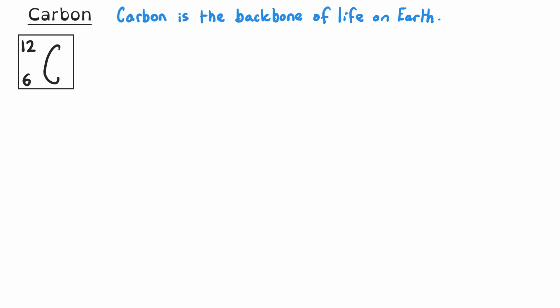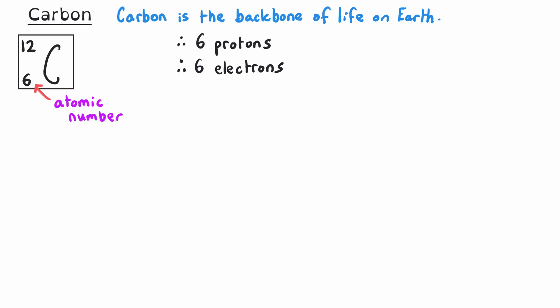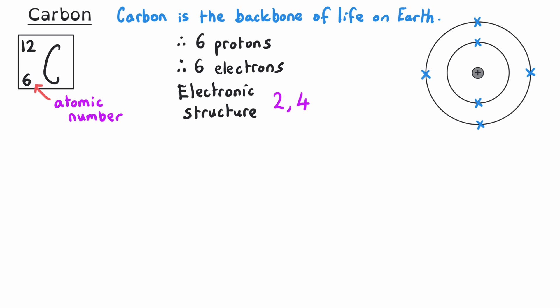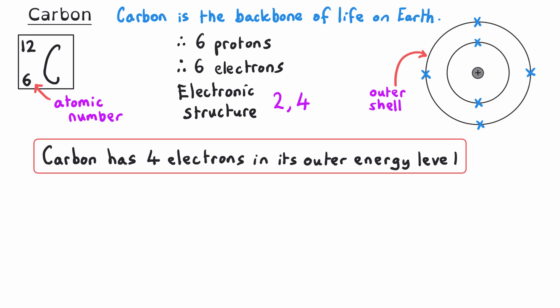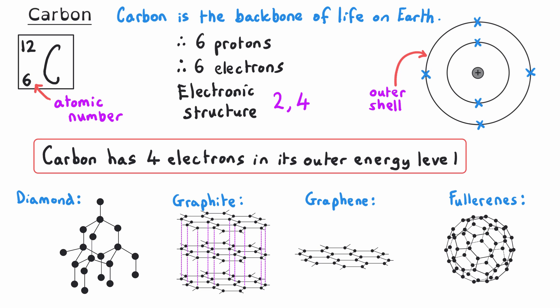Carbon in the periodic table is shown with its symbol C, its mass number, and its atomic number. The atomic number is six, which means it has six protons in its nucleus and six electrons in its shells. The electronic structure is 2,4 — two electrons in its first shell, which is then full, and four electrons in its outermost occupied shell, or energy level. Understanding carbon's various structures, such as in diamond, graphite, graphene, and fullerenes, is crucial for grasping its role in both biological systems and industrial applications.